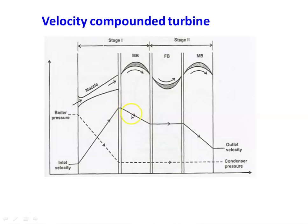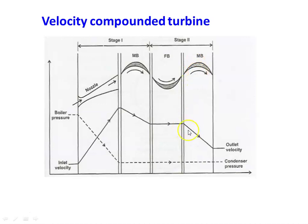In the first moving blade there is a certain percentage of decrease in velocity, and this decrease in velocity is converted into work. The velocity then remains constant in the fixed blade. The fixed blade is attached to the casing of the machine; its purpose is to deflect the steam to the next moving blade without loss of velocity or pressure. In the next moving blade, the velocity of the steam is utilized once again, and there is a further decrease in velocity as steam leaves.